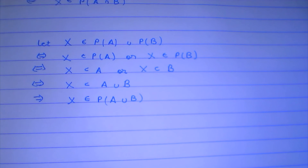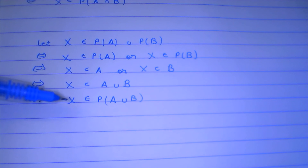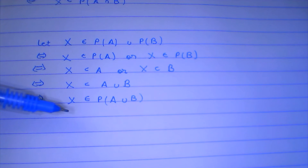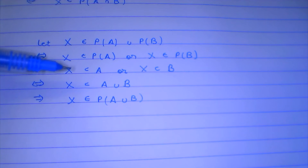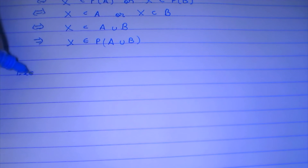But this is not if and only if — this is a single implication. That means if we have this, then this is true. But if we have this, then not necessarily all the time is the other direction going to be true. And that we can see with the following example.